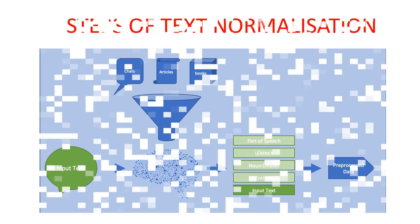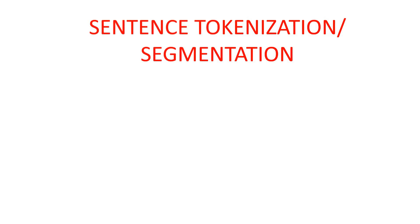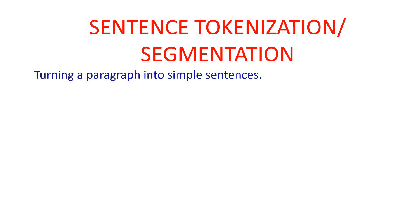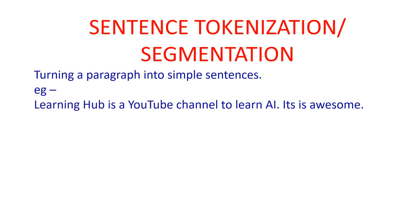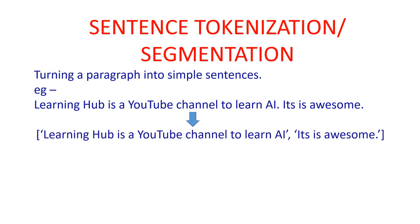In text normalization we have several steps. The first is sentence tokenization, also called segmentation — both terms have the same meaning. Sentence tokenization means turning a paragraph into multiple sentences. For example: 'Learning Hub is a YouTube channel to learn AI. It is awesome.' This paragraph has two sentences. We convert it into a list where the first item is 'Learning Hub is a YouTube channel to learn AI' and the second is 'It is awesome.' So we break the paragraph into sentences.